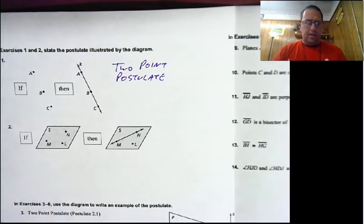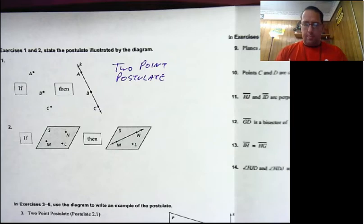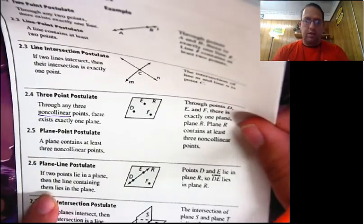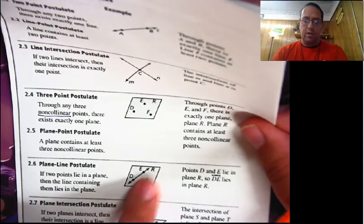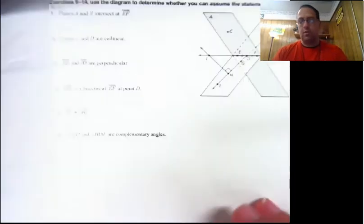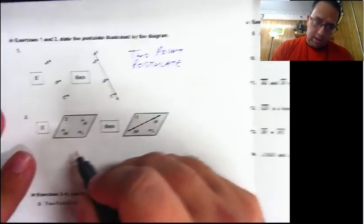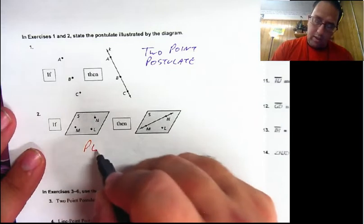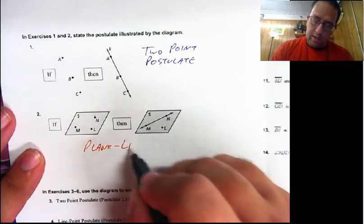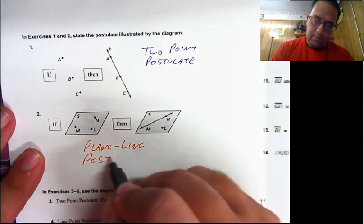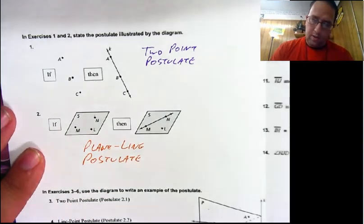Next one: we have plane S with some points on it, then plane S has a line in it. What would that be? If a plane has some points, then it has lines. There it is — the plane-line postulate. If two points are on the plane, then the line containing those points is also on the plane. So that's what we have here: the plane-line postulate.